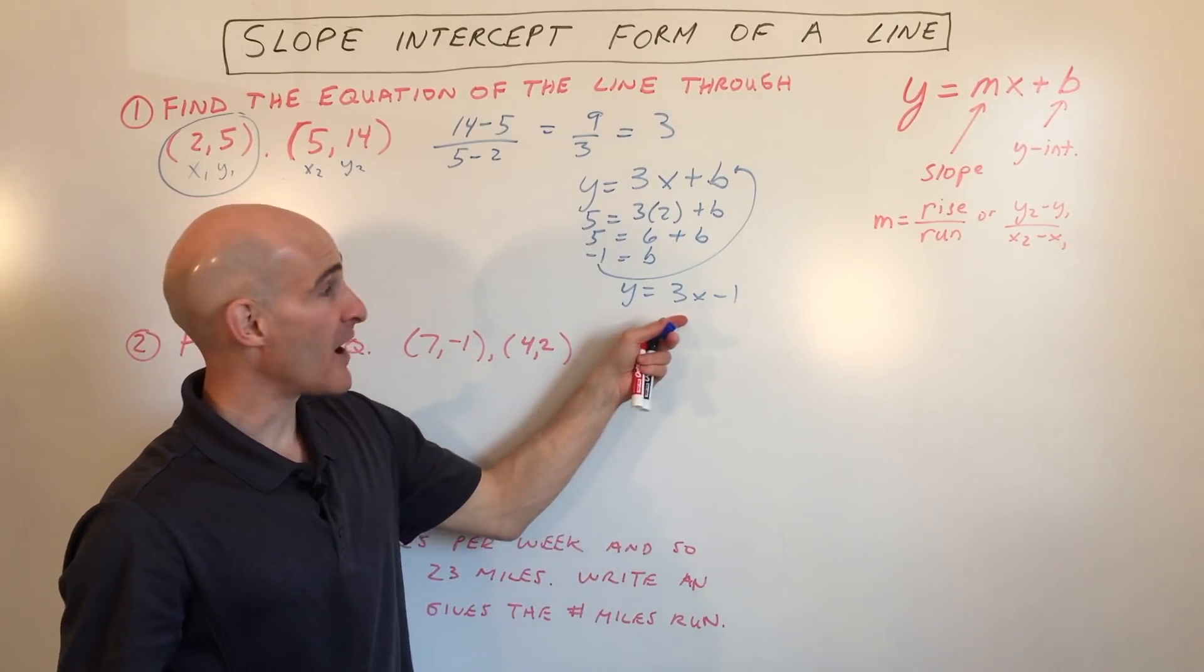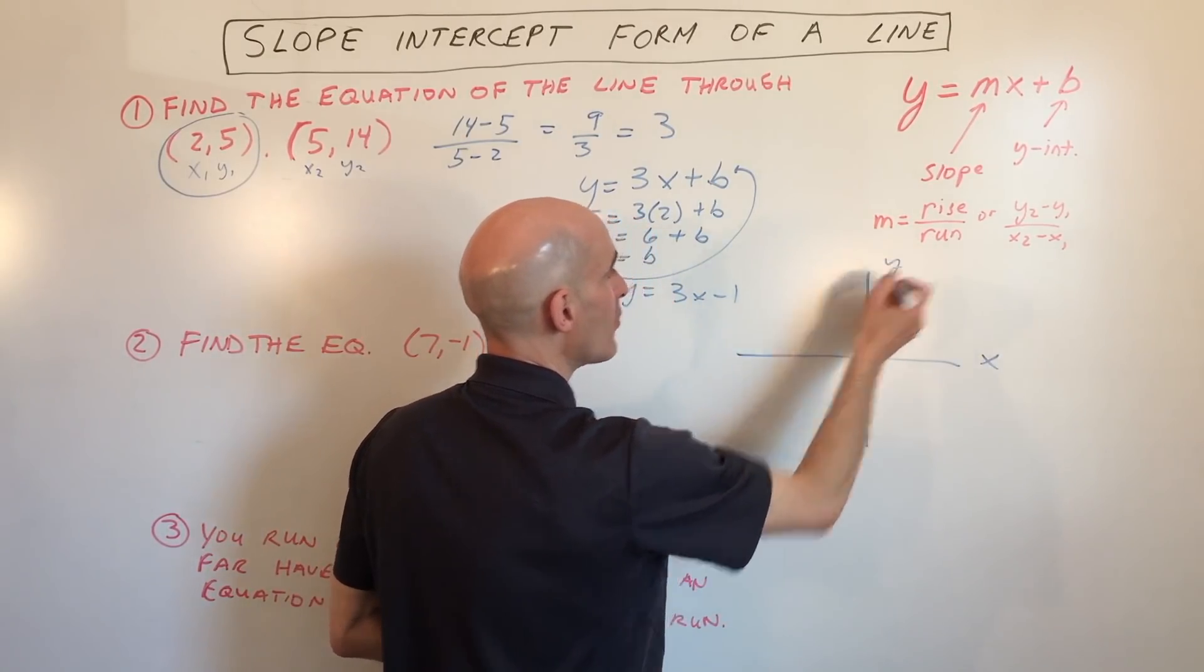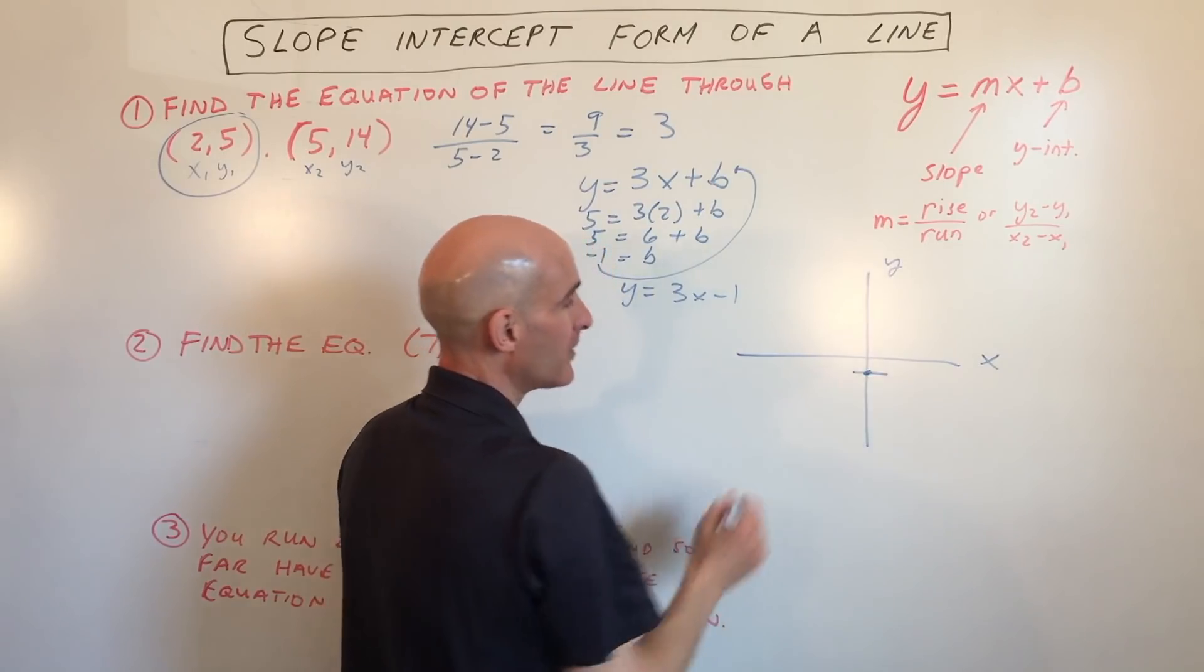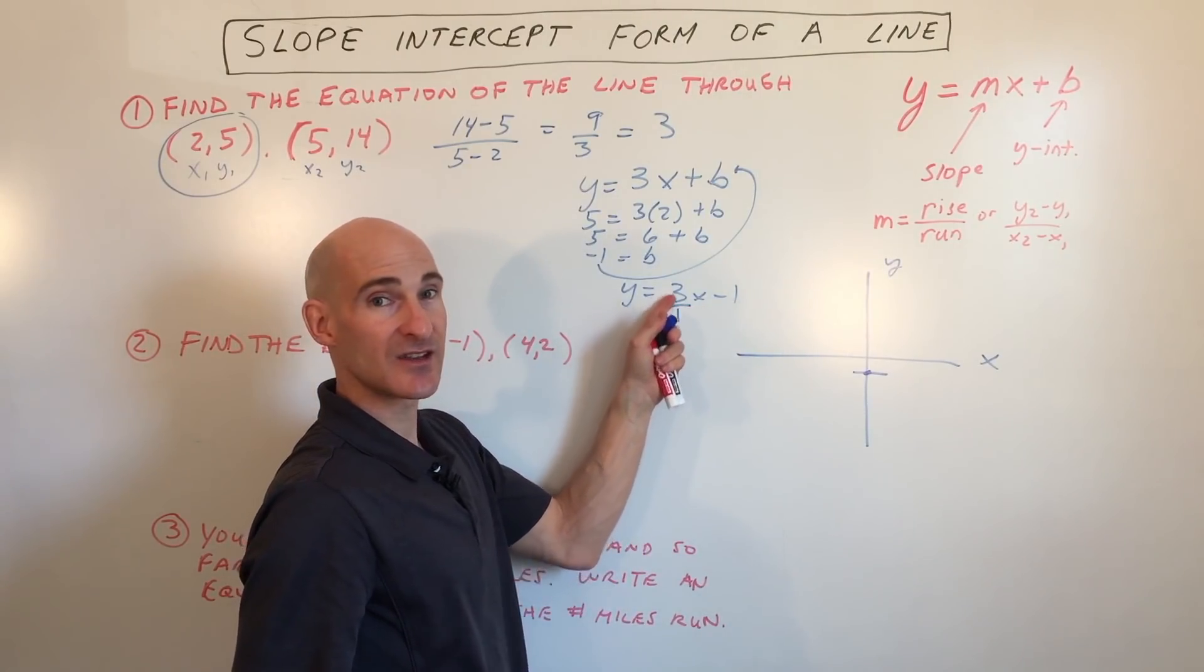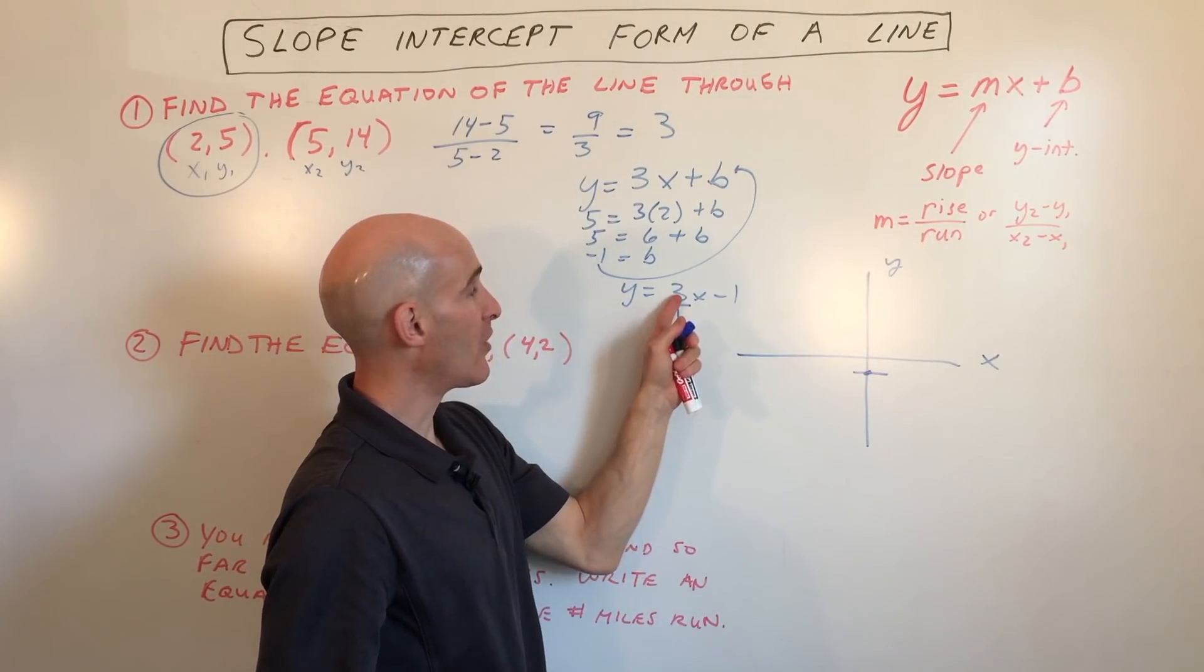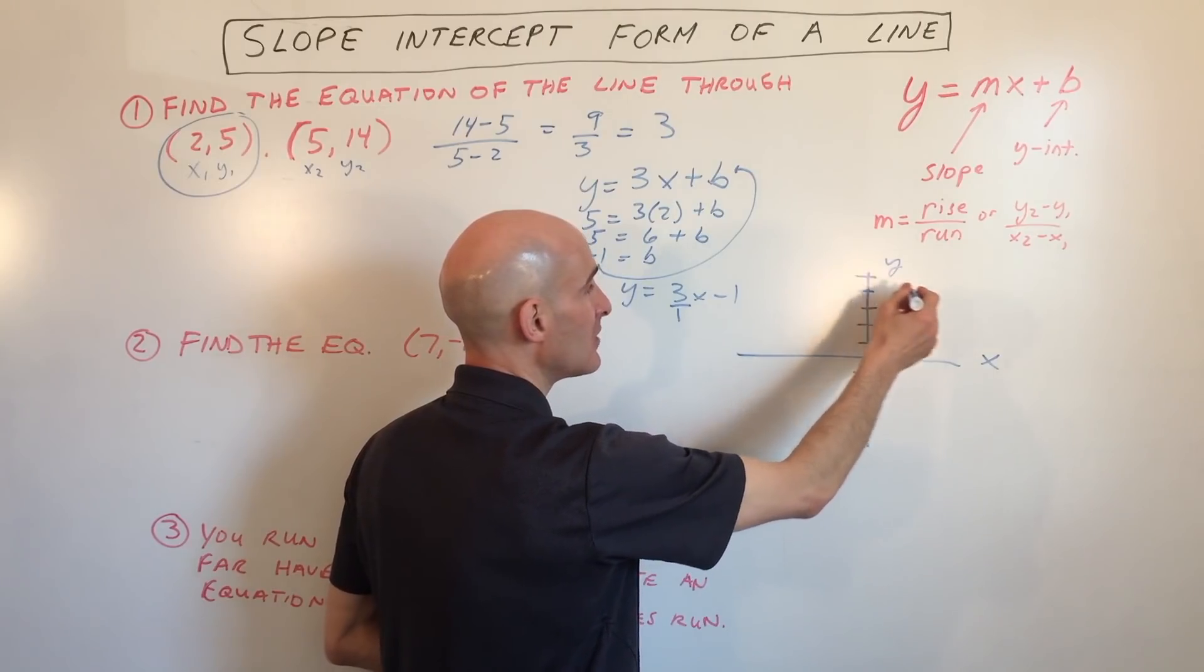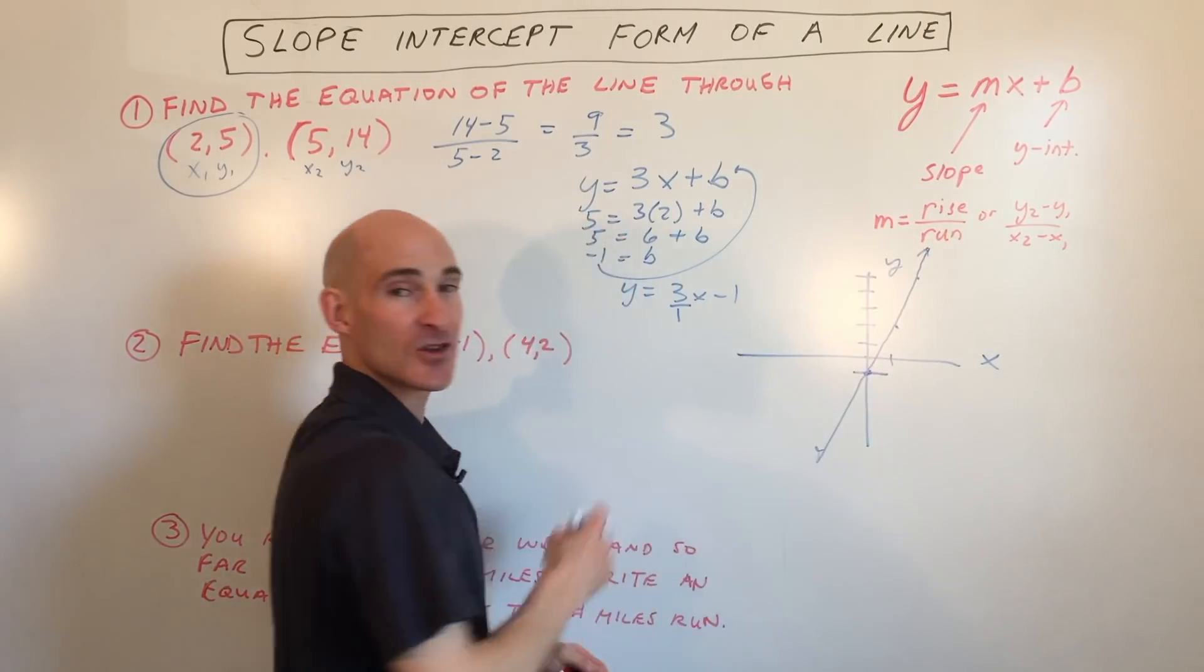Now let's graph this. Here's the x-axis, here's the y-axis. We're starting at negative 1, that's our y-intercept, where it crosses the y-axis, right down here at negative 1. And the slope is 3. If you have a whole number, you can write it as a fraction by putting it over 1. The numerator is the rise, the denominator is the run. So we're going up 3 and over 1. From here, I go up 1, 2, 3, and right 1. You can repeat that process: up 3 over 1. Draw a line through those points, and that's the graph of your line.